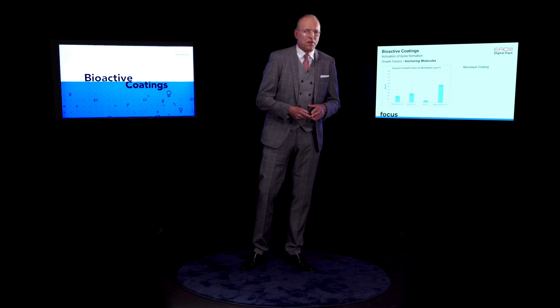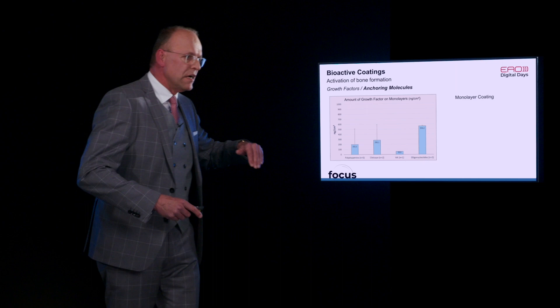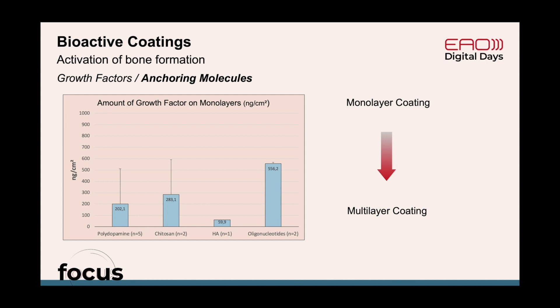So what is the reason for these minor effects? One reason could be that monolayer coatings of implant surfaces can only accommodate very low amounts of growth factor — in the nanogram range. Polydopamine, chitosan, hyaluronic acid, or the oligonucleotides we used had on average only about 200 nanograms, which is quite little. Maybe the surface simply is not big enough to accommodate the amounts we need. The consequent move would be to go from monolayer coating to multilayer coating — back into a three-dimensional coating structure.